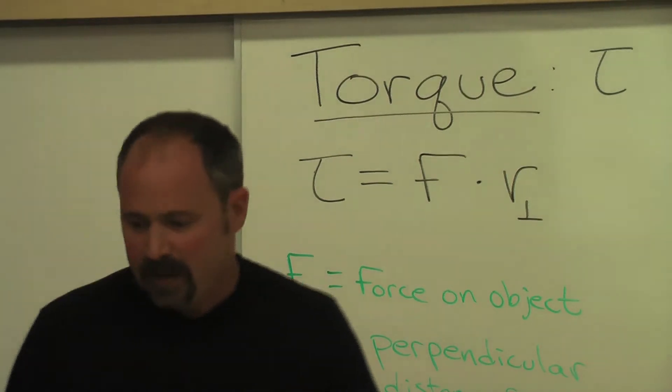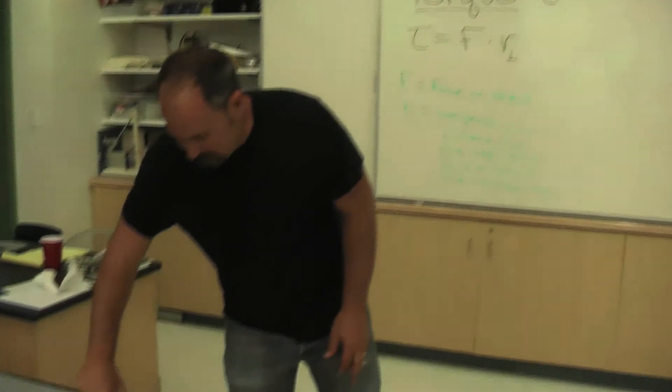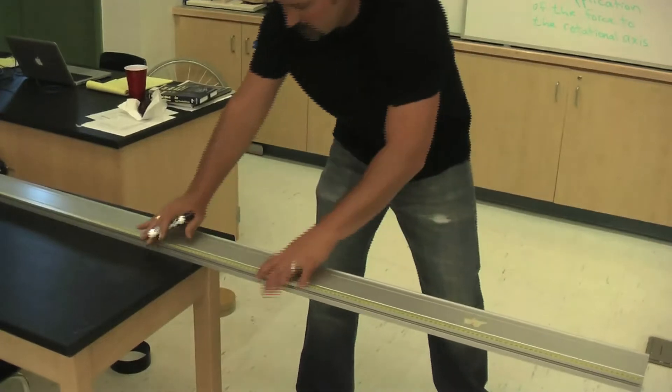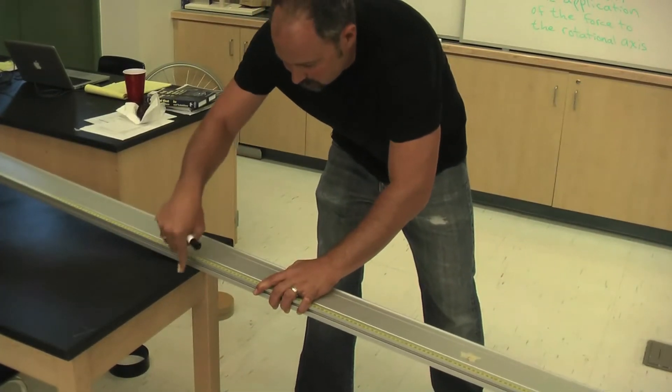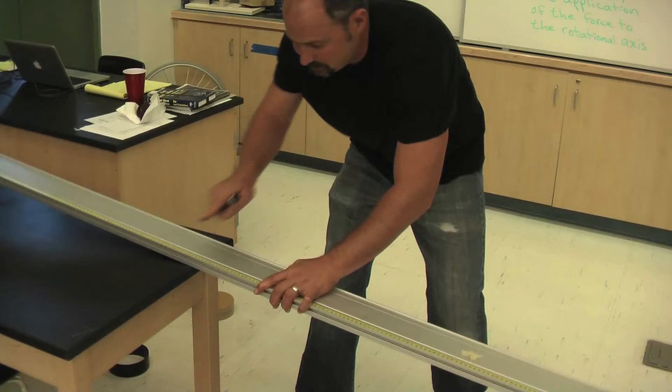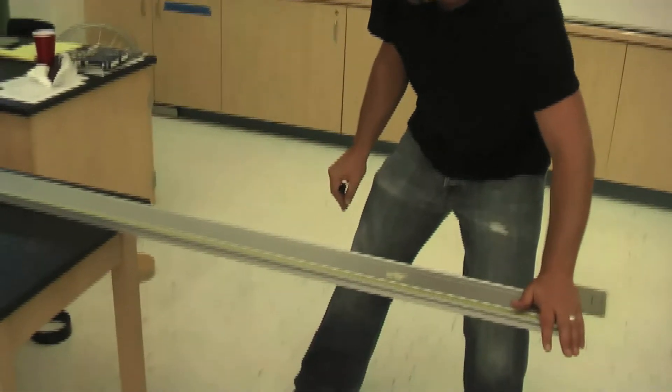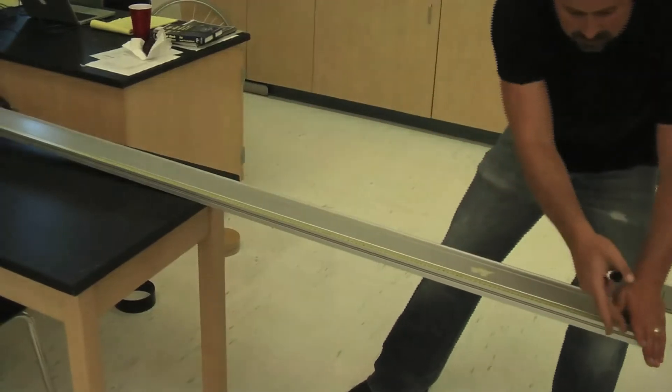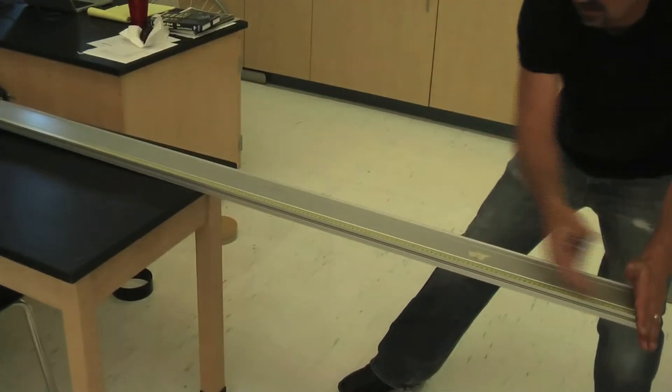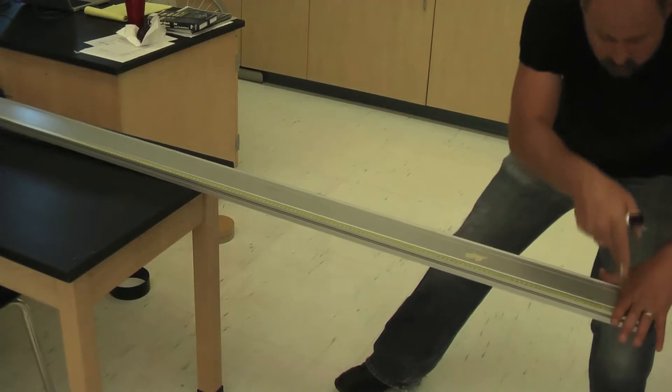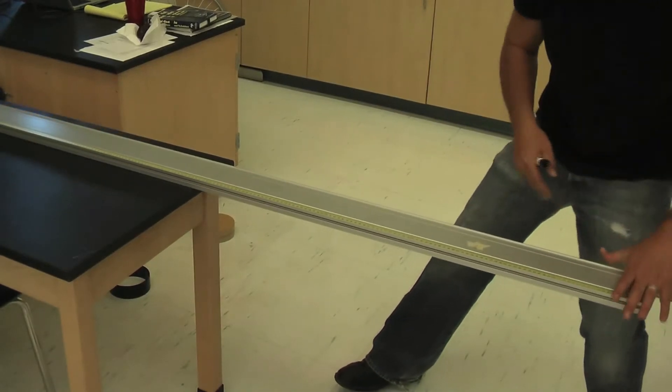So, for example, if I have something like this, and you can see it's pivoted right here. So this is the rotation axis. And if I apply my force here, well, this distance is r perpendicular. That is the distance from the rotation axis to the application of the force.